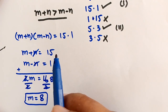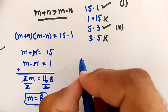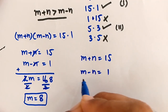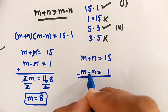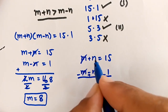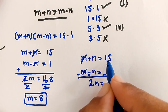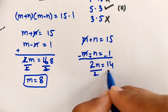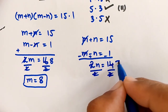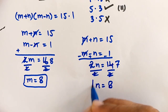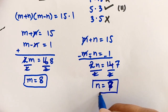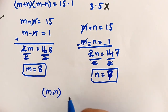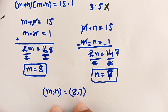To find n, we subtract equation 2 from equation 1. The m terms cancel: n+n = 2n, and 15-1 = 14, so 2n = 14. Dividing both sides by 2 gives n = 7. So from Case 1, (m, n) = (8, 7).